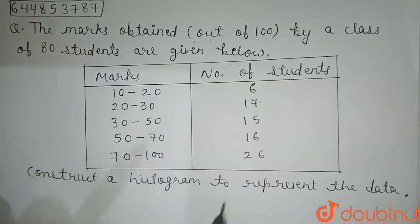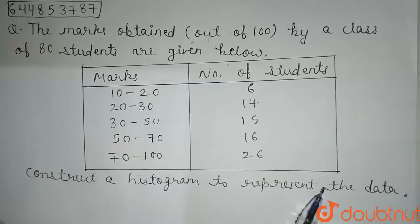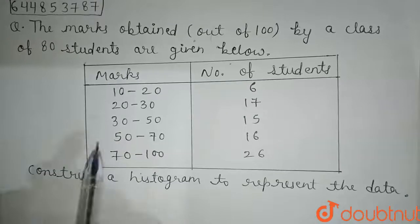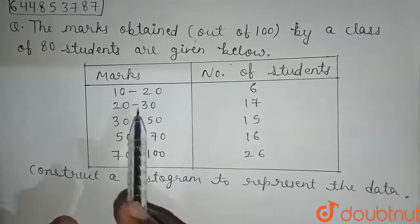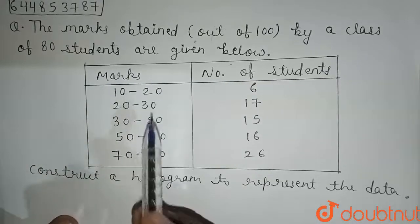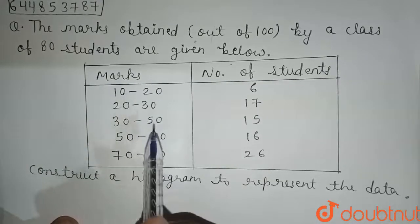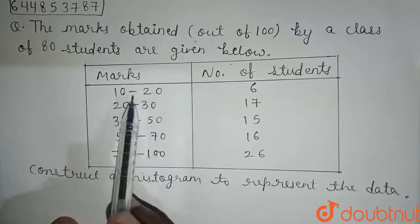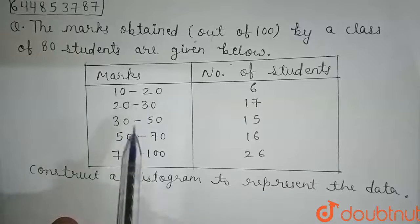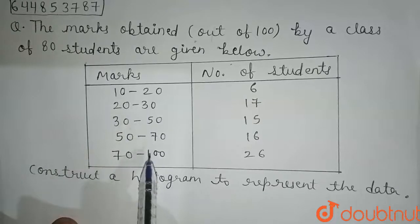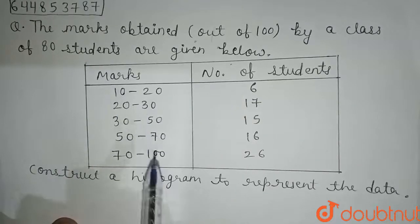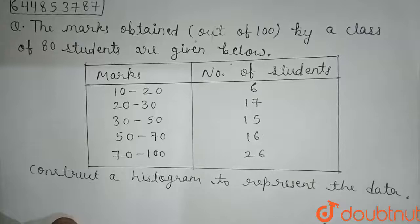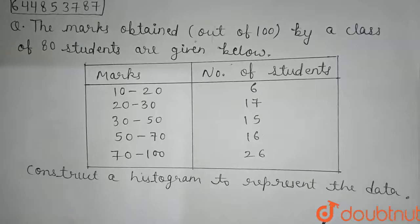Looking at this data, we can see that the class intervals are of unequal widths. We can see here: 10, 10, 20, 30 — meaning unequal widths.